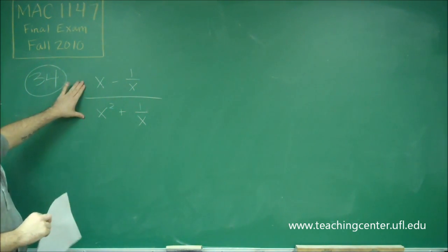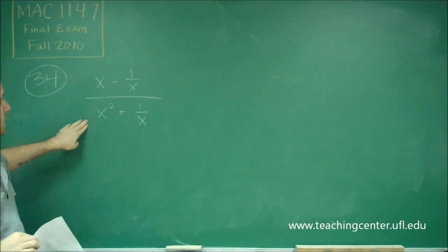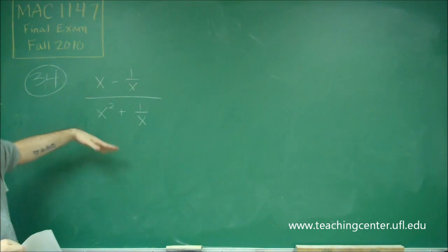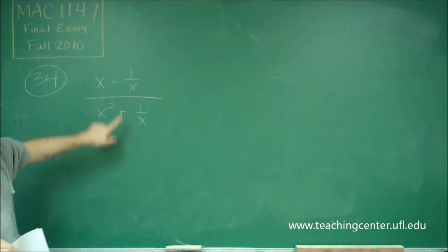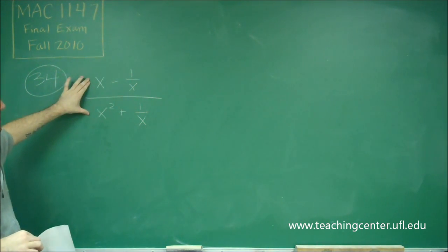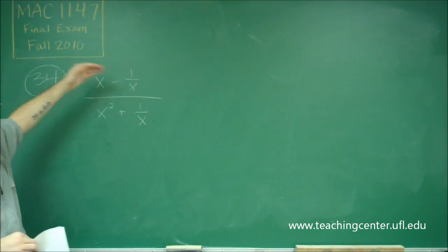In order to simplify this, we have to get a common denominator for both the numerator and the denominator. Since only one of these in each section is a fraction, we only need to get the common denominator for the first term in each. Since we already have a denominator of x here, we just need to make a denominator of x everywhere else.